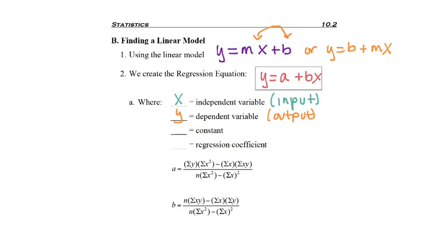For us, the letter a is a constant. And if you think about it, it's y-intercept, right? When you have y equals mx plus b, b, the constant, is your intercept. But for us, we're actually using the letter a.